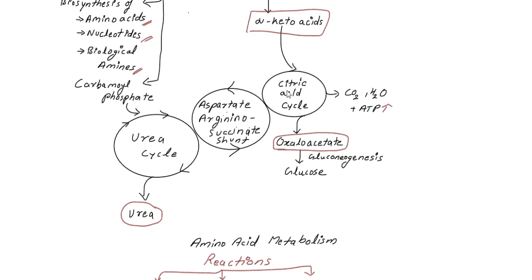In the case of oxaloacetate, the carbon skeleton can follow a particular pathway known as gluconeogenesis, where glucose molecules are produced. So the amino acid carbon skeleton can be used to generate glucose via oxaloacetate.